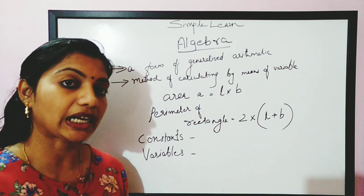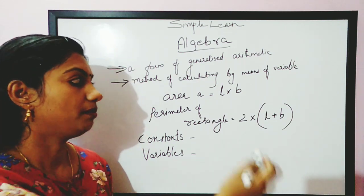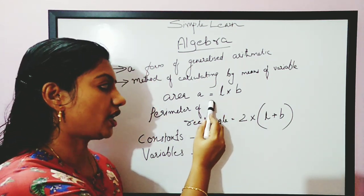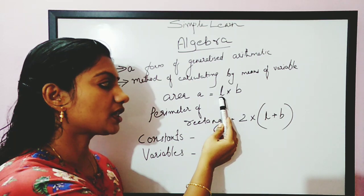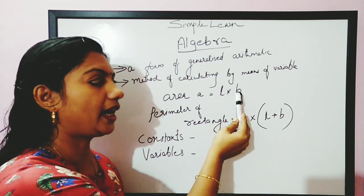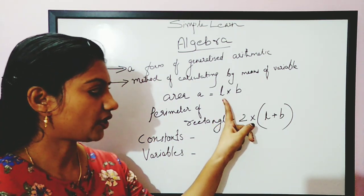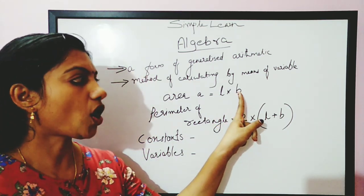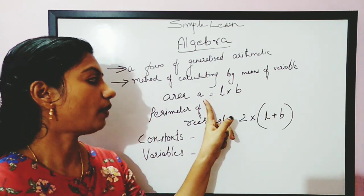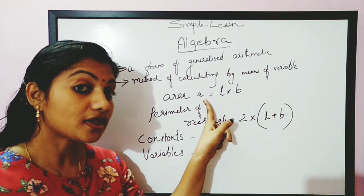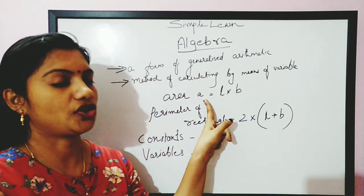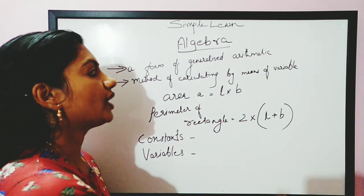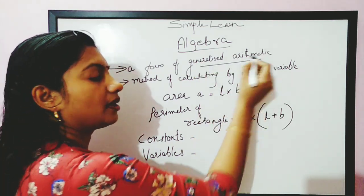Why do we call it generalized? Because the value of A changes with respect to L and B. If I change L or if I change B, the value of A is going to change. That's why we call it generalized arithmetic.